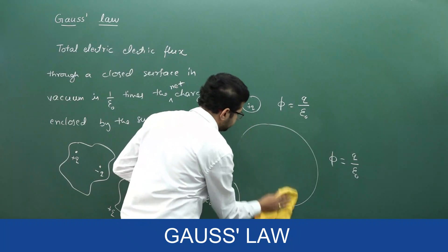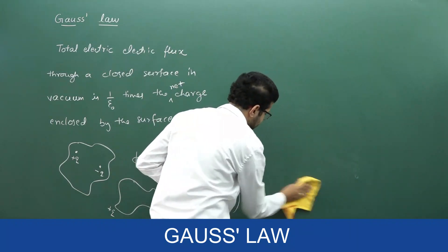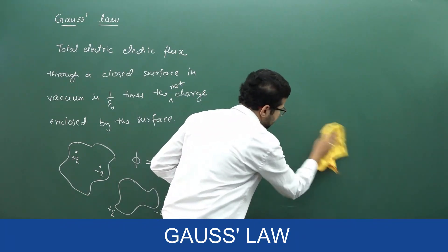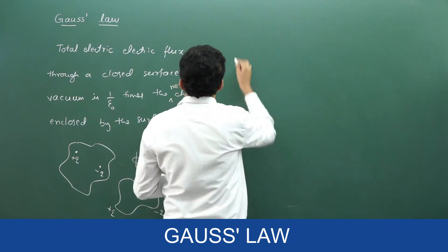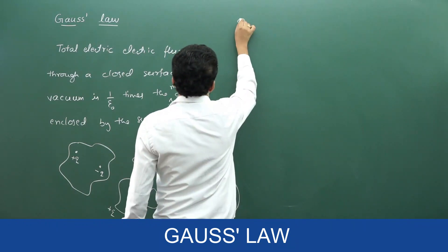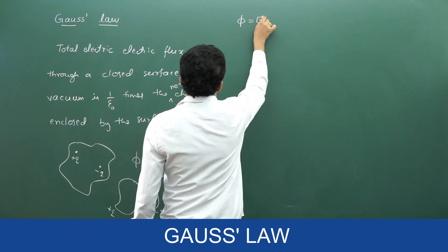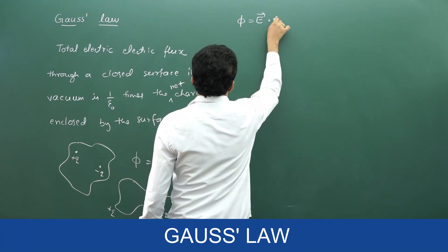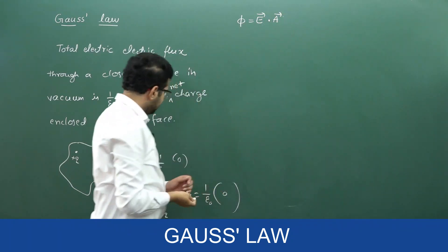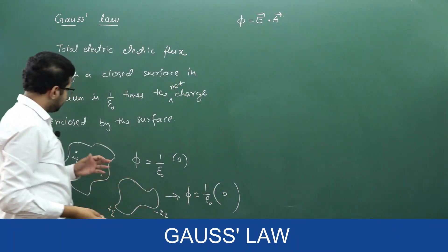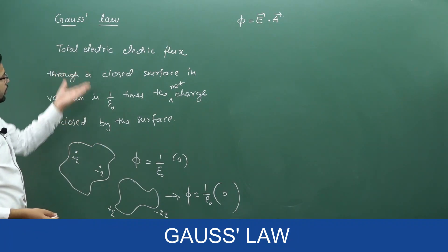Now, we know one definition of electric flux. What is the definition of electric flux? Electric flux is the dot product of electric field and area vector. Using this, we will give a proof for Gauss law.